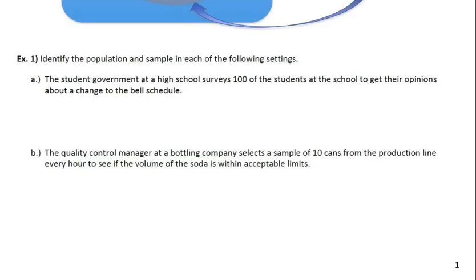So the first example here says to identify the population and sample in each of the following settings. Part A says the student government at a high school surveys 100 of the students at the school to get their opinions about a change to the bell schedule.